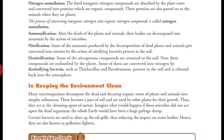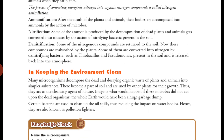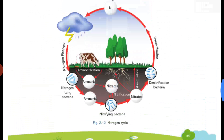The fourth step is nitrification — converting ammonia into nitrates with the help of nitrifying bacteria in the soil. The fifth step is denitrification — converting nitrogen compounds back into atmospheric nitrogen. Nitrogen compounds are returned to the soil, but some are converted into nitrogen gas by denitrifying bacteria like Thiobacillus and Pseudomonas, which is then released back into the atmosphere. This process is called denitrification.